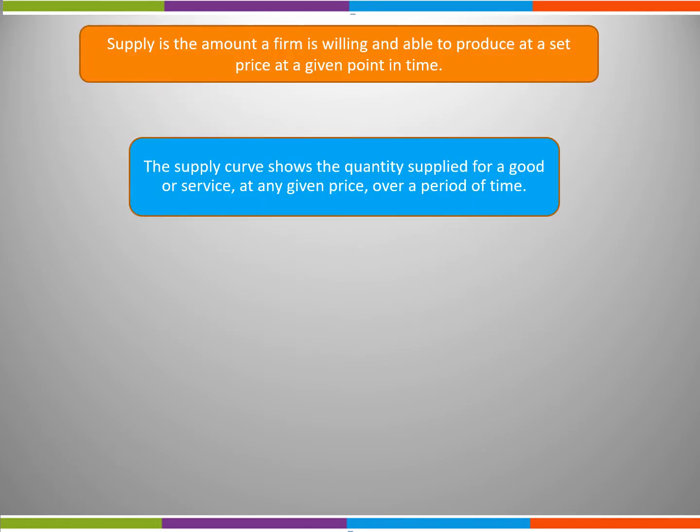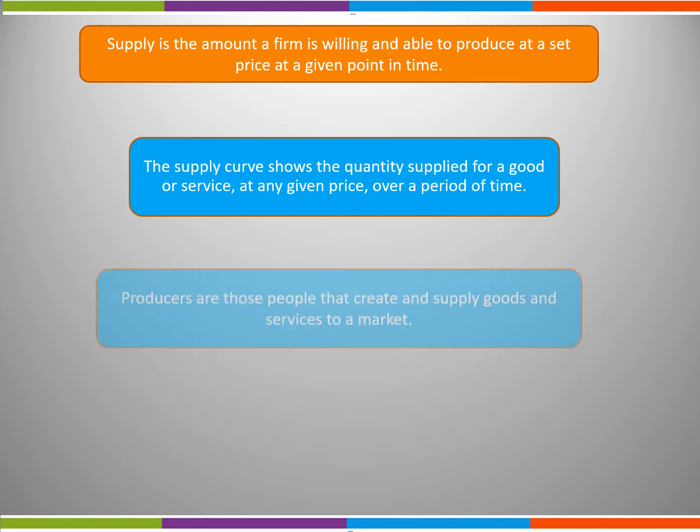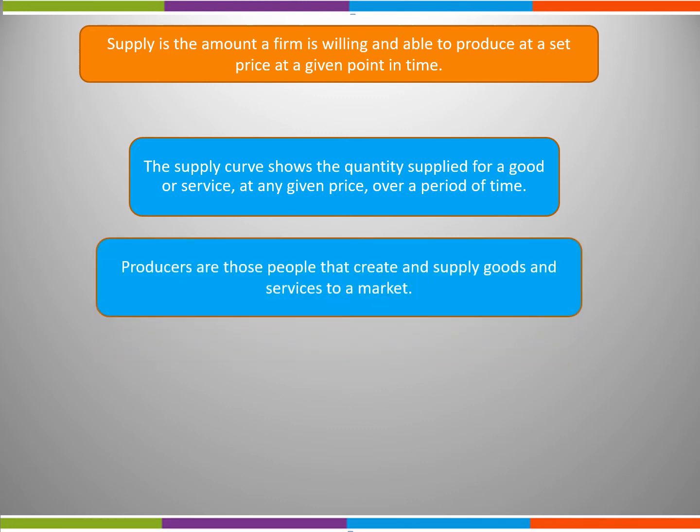The supply curve shows the quantity supplied for a good or service at any given price over a period of time. Producers are those people that create and supply goods and services to a market.